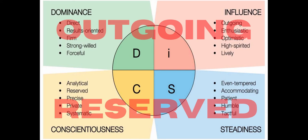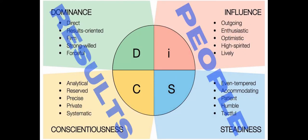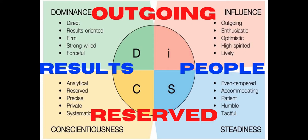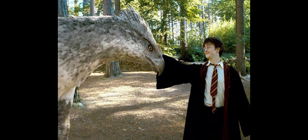I is for influence. These people are often outgoing, enthusiastic, optimistic, high-spirited, and lively. They're often characterized as typically very talkative, upbeat, and distracted. And when we think of this, we think of Ron Weasley, as you can see in these clips.